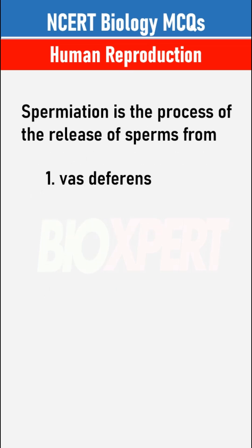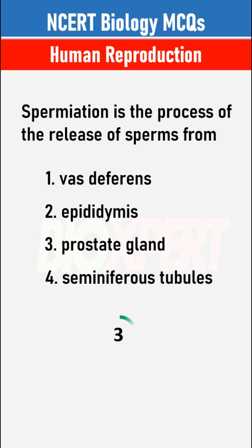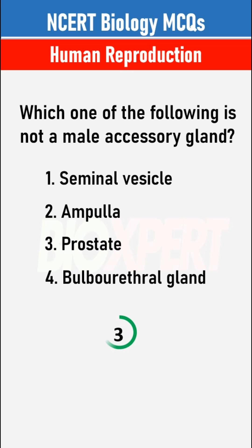Spermeation is the process of the release of sperms from seminiferous tubules. Which one of the following is not a male accessory gland? Ampulla.